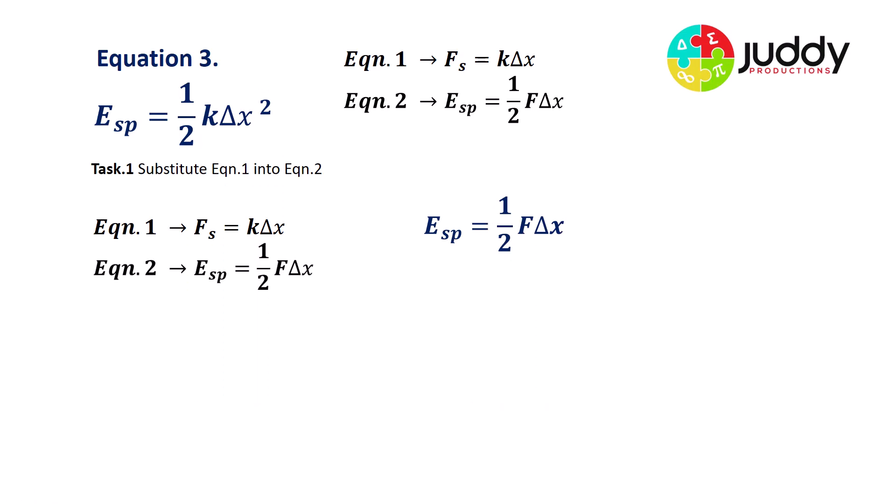Let's look at our two equations. Equation number one states that the force upon the spring is equal to k delta x. And equation number two states the strain potential energy stored in the spring is equal to half f delta x. So we can literally take our statement from equation one, the restoring force of the spring, and place it into equation two. So we're substituting k delta x from the first equation into the force variable for the second equation.